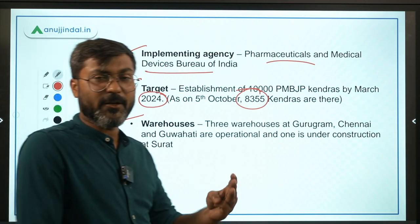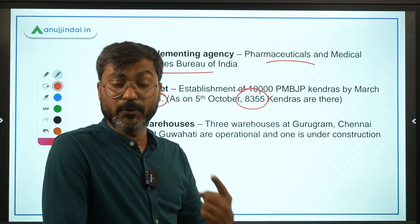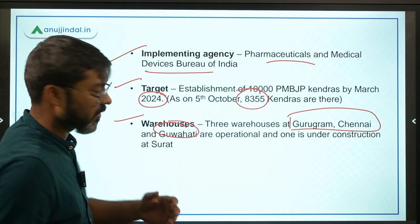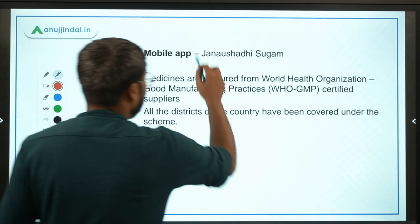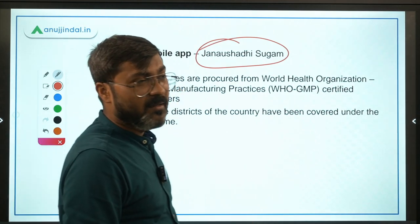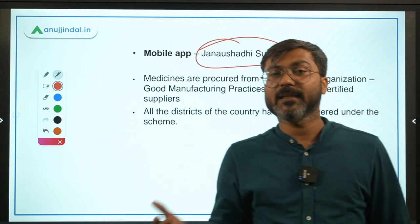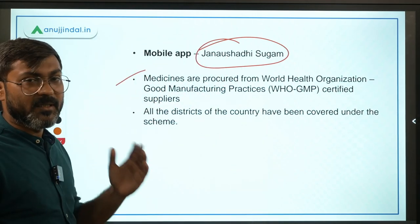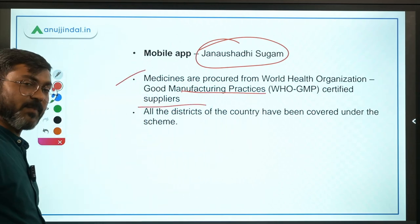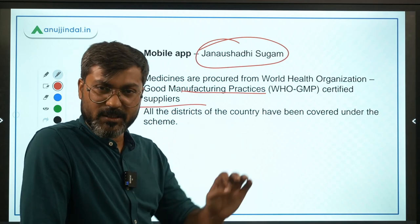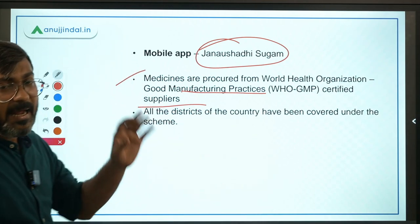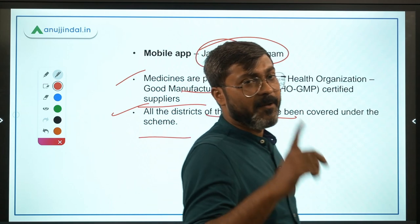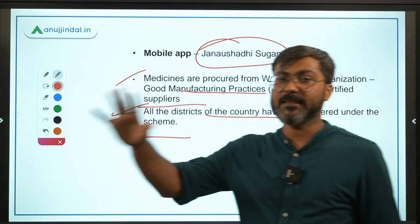There is a mobile app called Janaushadhi Sugam with which citizens can easily locate the Kendras and get pricing information. Medicines are procured from WHO good manufacturing practices certified suppliers, ensuring good quality. Very importantly, all districts of the country have been covered under the scheme — meaning there is at least one Pradhan Mantri Bharatiya Janaushadhi Kendra in every district.